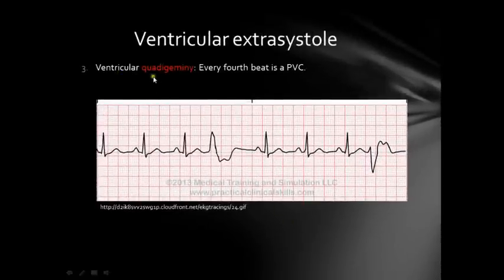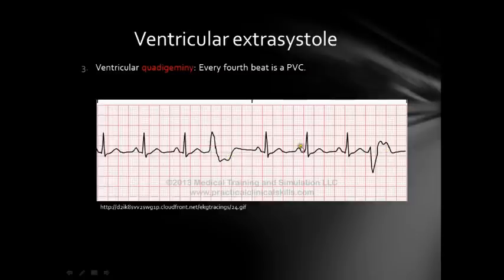Ventricular quadrigeminy means every fourth beat is a premature ventricular contraction: normal beat, normal beat, normal beat, ventricular extrasystole, repeating. You can also see here that this ECG strip is multifocal — this ventricular extrasystole looks different in morphology from this one — so we can call it multifocal ventricular quadrigeminy.